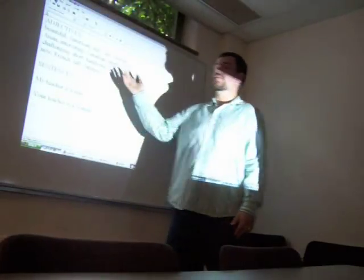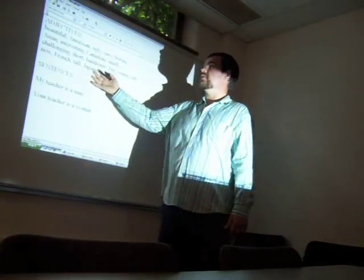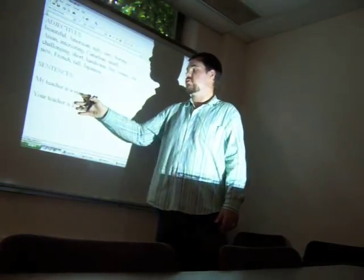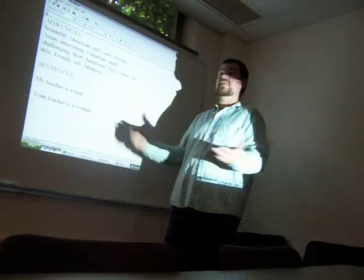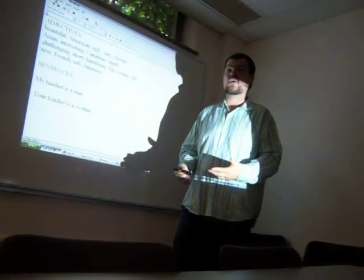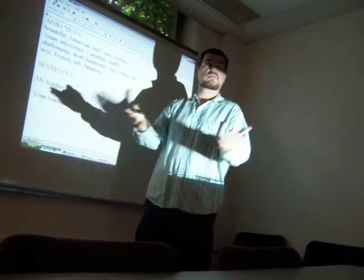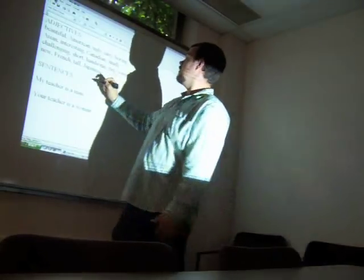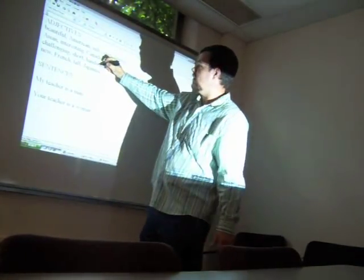For adjective order, you give your students a list of adjectives and a couple of sentences like 'my teacher is a man' or 'your teacher is a woman,' and have the students come up and drag and drop the adjectives in the appropriate order for each sentence. So my teacher is a... what would you like to make in the sentence? Handsome. Ugly Canadian — I don't think we have any of those here.